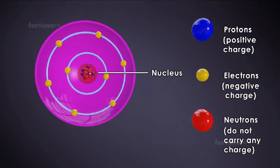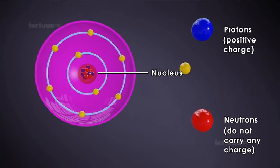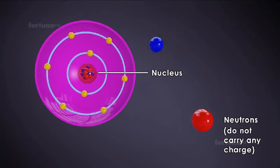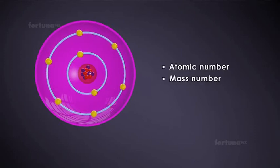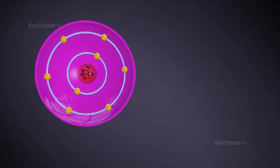Every element on earth has a defined number of electrons, protons, and neutrons, and these numbers are unique to that particular element. Every element also has two specific numbers that are associated with it: an atomic number and a mass number. Let's see what those terms mean.